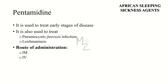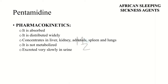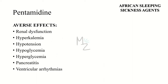The first drug for African sleeping sickness is pentamidine, used to treat the early stages of the disease. It is also used to treat Pneumocystis jirovecii infection and leishmaniasis. Routes of administration are intramuscular and intravenous. Mechanism of action: the parasite concentrates pentamidine by an energy-dependent high-affinity uptake system; the drug interferes with parasite synthesis of RNA, DNA, phospholipids, and proteins. After absorption, it is distributed widely and concentrates in the liver, kidney, adrenal glands, spleen, and lungs. It is not metabolized and is excreted very slowly in urine. Adverse effects include serious renal dysfunction — reversible on discontinuation — hypokalemia, hypotension, pancreatitis, ventricular arrhythmias, and hypoglycemia.